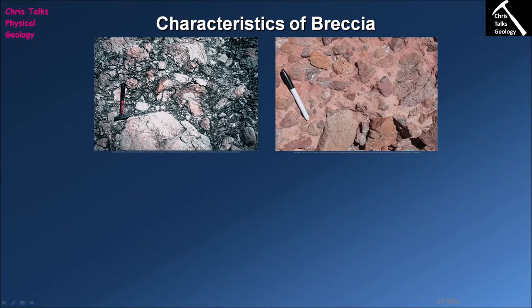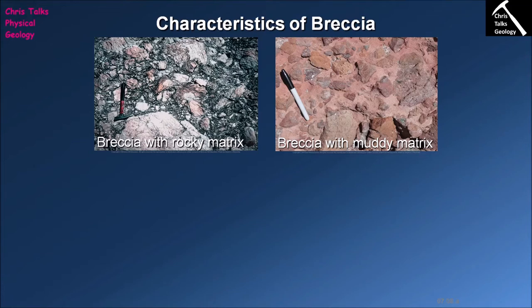These clasts are held in place by the matrix, and the matrix essentially is the cement. The type of matrix in breccias and conglomerates is highly variable and depends on the exact conditions of the environment in which the breccia or conglomerate was forming. For instance, we have a breccia here with a rocky matrix consisting of fine pieces of the rocks making up the larger clasts, and another where the clasts are held in place by a mud matrix. If you had a breccia or conglomerate forming in a volcanically active environment, the matrix could consist of pyroclastic material.